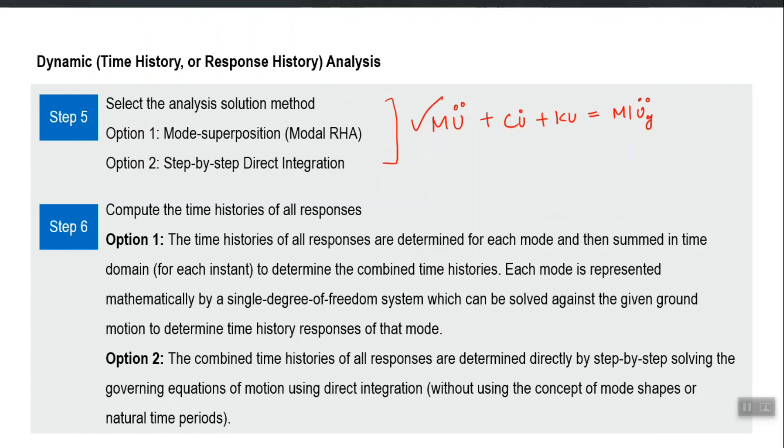Here in option one modal RHA, we run the single degree of freedom system for the whole time history and get the dynamic fluctuating results for that mode.